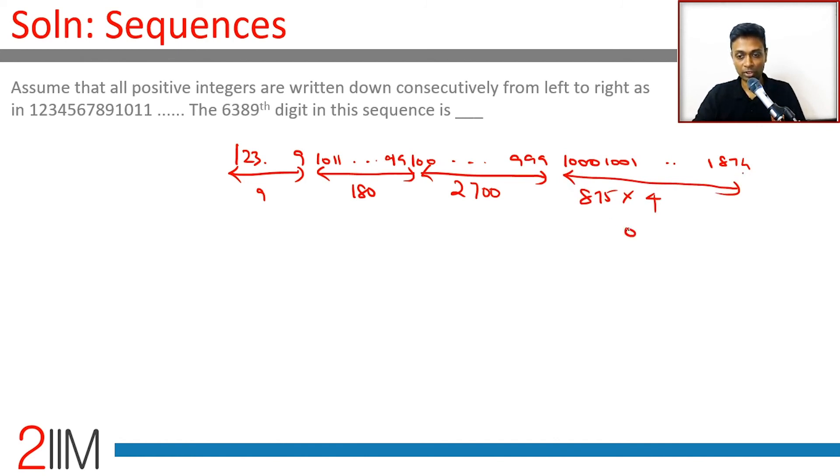875 into 4 here. 20, 28 plus 2300, 3320 plus 3, 3500. So we add 3500 plus 2700 plus 180 plus 9, we should get 6389.